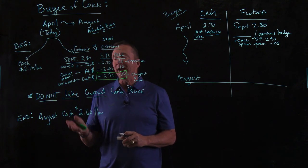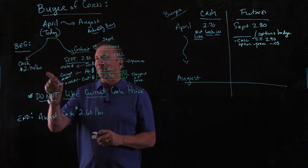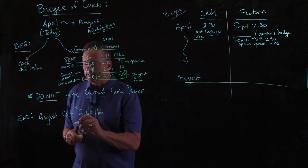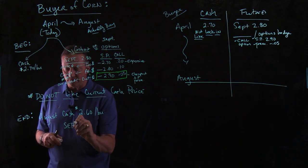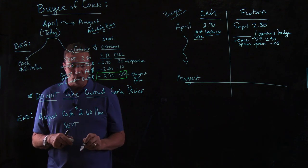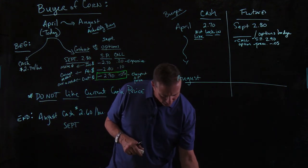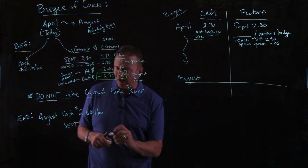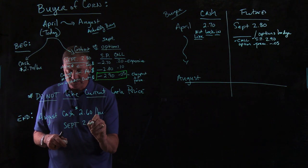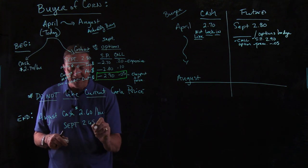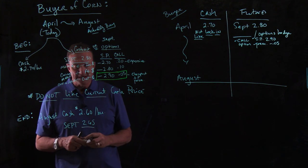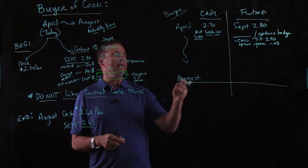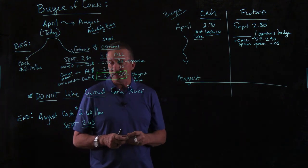So as a buyer, we're happy about that — the price fell. In August, the September contract that we looked at moved to a price of $2.65 on that September contract. So that's the information we need to fill out our table.